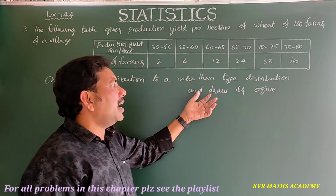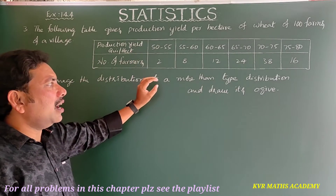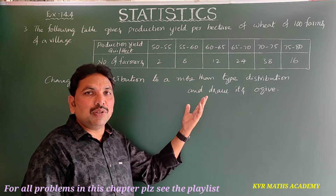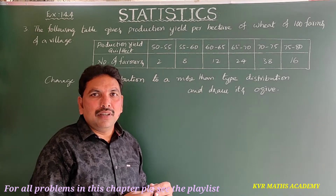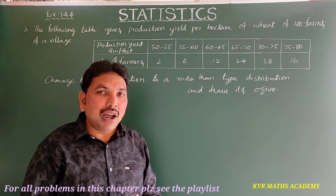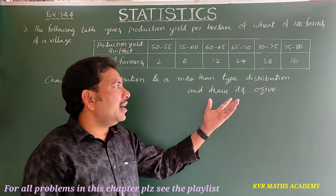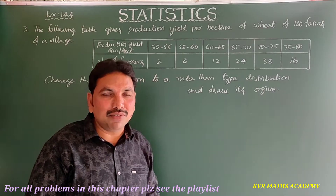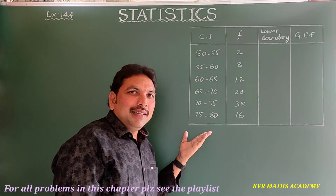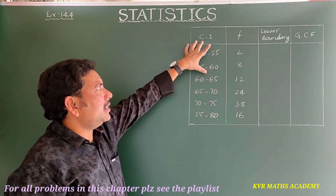From this data we should change the distribution to a more than type distribution and draw it — that is, draw a more than type cumulative frequency table and graph. In the first two problems we drew less than type cumulative frequency curves; here we should draw greater than or more than type cumulative frequency curves.